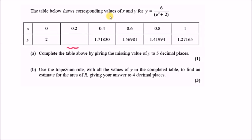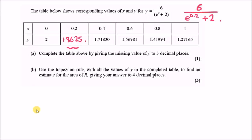New problem: a table shows values of x and y for the function y equals 6 over (e to the power x plus 2). We need to find the missing y value at x equals 0.2. Plugging in: 6 over (e to the 0.2 plus 2) gives approximately 1.8625.